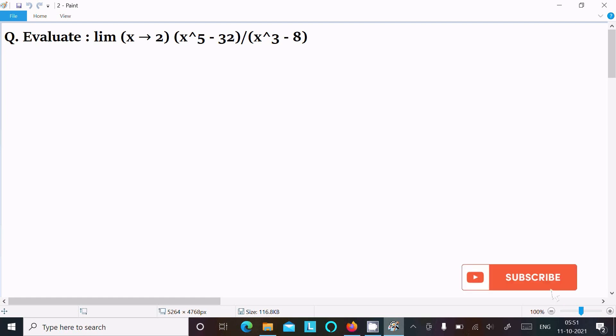In this video lecture I am going to evaluate limit x tends to 2 of (x^5 - 32) divided by (x^3 - 8). So let's see the answer. First, here writing the given limit x tends to 2, (x^5 - 32) divided by (x^3 - 8).